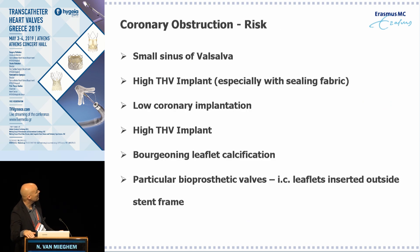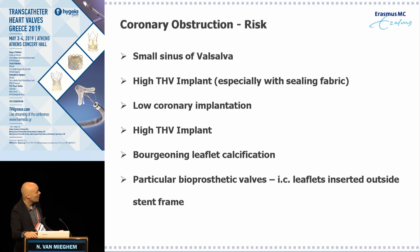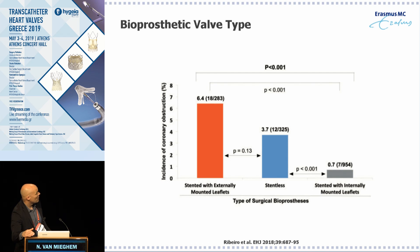That distance seems to be a more subtle variable to consider than just your sinus of Valsalva size, because if you have a large sinus but also implant an oversized valve, the distance between the valve frame and the coronary ostia can still be small — and vice versa. So the risks are: a small sinus, a high valve implant, low coronary implants, bulging leaflet calcification, and in particular bioprosthetic valves.